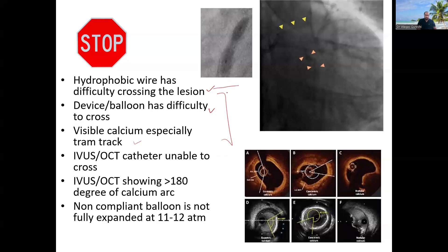Now this, just wiring difficulty and going for atherectomy, of course, this is very liberal. But if the device is not crossing, you should start thinking about it. If there was difficulty crossing through that, there's visible calcium. This is the point where I'm like, okay, I need to do atherectomy. Most people decide about atherectomy at this point where IVUS is not crossing.